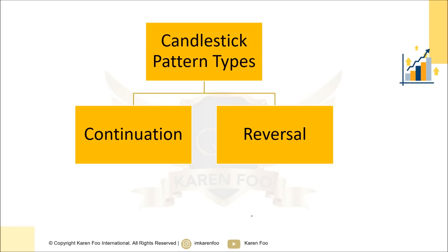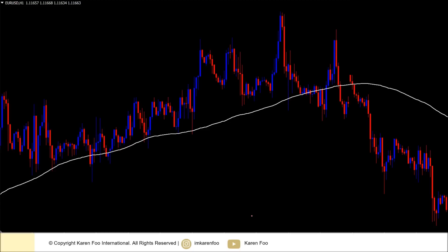Candlesticks can also be classified into two types: continuation signals or reversal signals. Both can be single, double, or triple candlesticks. Continuation signals mean the trend is going to continue. When it comes to reversals, there are two types: a small retracement within an uptrend, or a complete change in trend direction.